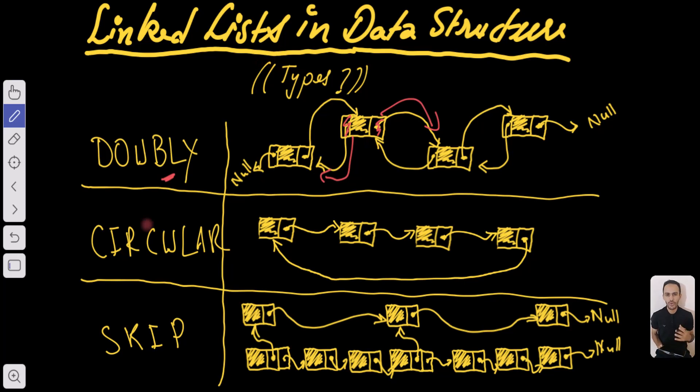There are also what we call circular linked lists and in circular linked lists there are singly linked lists with the only difference that the last element in the linked list points to the head of the linked list.